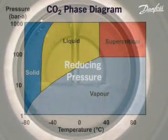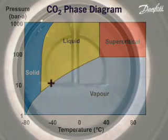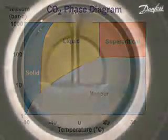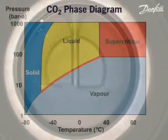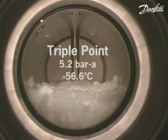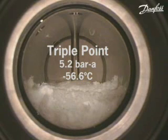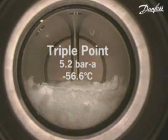The triple point is reached with further reduction in pressure and temperature. The system has now moved further down the vapour-liquid equilibrium line. Solid CO2 begins to form once a pressure of 5.2 bar absolute and a temperature of minus 56.6 degrees C has been reached. The triple point is the only pressure and temperature combination at which solid, liquid and vapour CO2 can exist simultaneously in equilibrium. As the pressure continues to fall below the triple point, only solid and vapour are present in the cell.